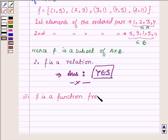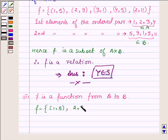Now F is a set having ordered pairs (1,5), (2,9), (3,1), (4,5) and (2,11).